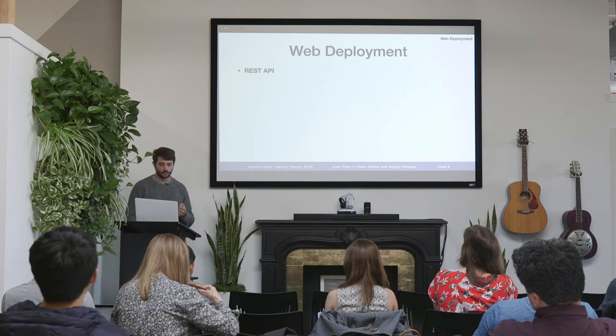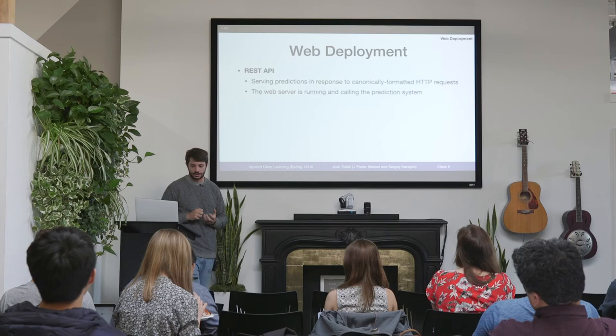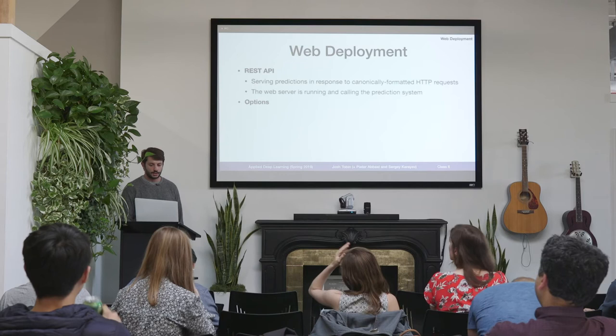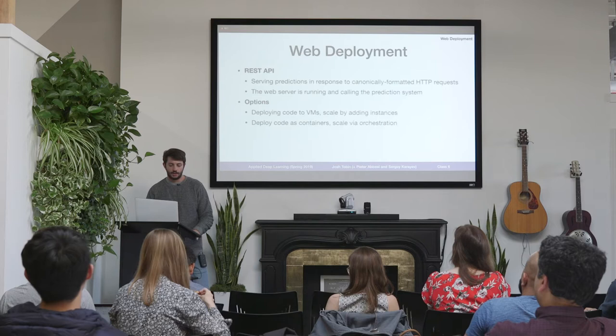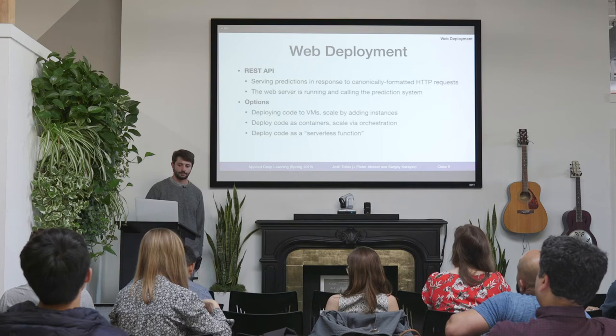For deployment, a few concepts. The first is a REST API — just a general API for HTTP systems. One way to think about deploying a machine learning system is treating it as a black box called by a web server. You have a bunch of different options for deploying machine learning code into production: you can put the code into a virtual machine like a Docker container and scale it up by adding instances. Or you can do it via orchestration. And then there's serverless functions, which Sergey really likes, where you don't actually have to manage your own infrastructure at all.